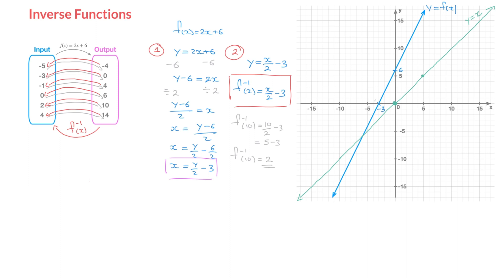The inverse function we're trying to draw is the mirror image of this blue line across the line y = x. Here are two more things to remember to sketch the inverse function. If ever the graph of f(x) crosses the line y = x, like at the point right here, then the inverse function has to cross that line at the same point. So the inverse function has to pass through that red point, with coordinates (−6, −6).